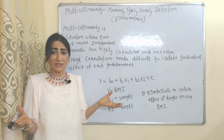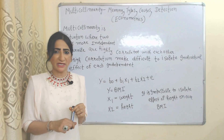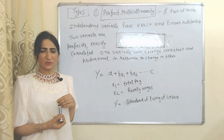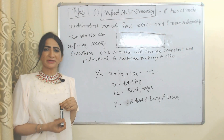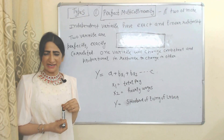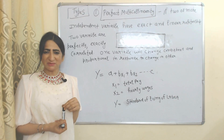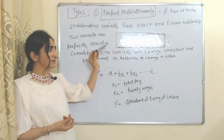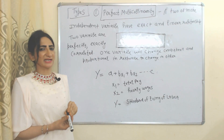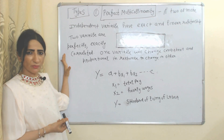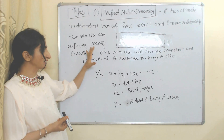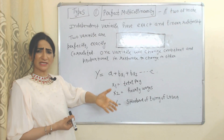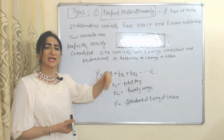Now we are going to talk about types of multicollinearity. The first is perfect multicollinearity, where two or more independent variables have an exact linear relationship — meaning they are perfectly and exactly correlated. One variable will change consistently and proportionally in response to a change in the other variable.